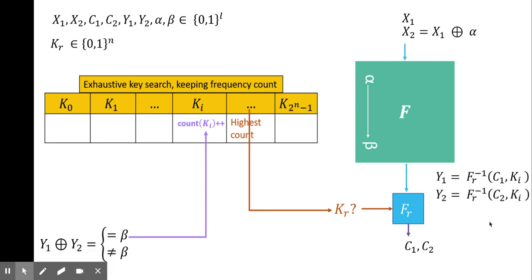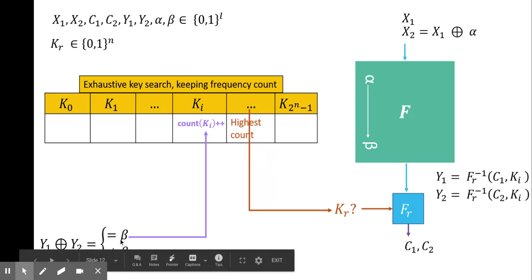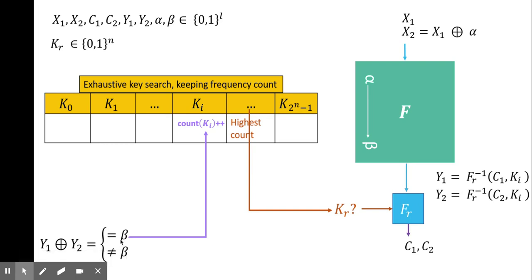We have got Y1 and Y2. Then we XOR them to see if they output beta or not. Since the differential tail alpha goes to beta exists and we have chosen inputs which have input difference as alpha, it is highly probable to get Y1 XOR Y2 as beta. The only variable factor that decides if Y1 XOR Y2 is beta or not is the candidate key Ki. If Y1 XOR Y2 output beta, then we increase the counter by 1 for that particular key Ki in the table.